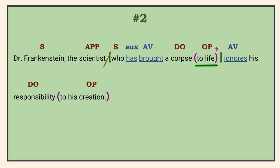'TO LIFE' is a prepositional phrase telling how or in what manner he brought it. If you aren't sure of the question, check the noun in front of the prepositional phrase. 'TO LIFE' clearly isn't telling which one or what kind of corpse.